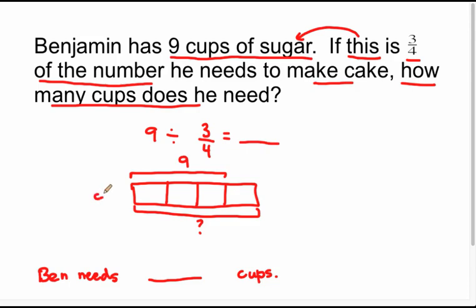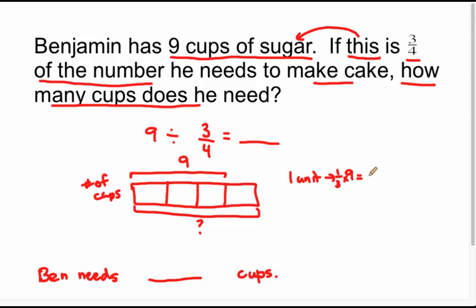And I'm going to mark off three of those parts, and three of those parts is the number nine. So if I wanted to find what all four of these parts are, I first have to find the size of one part — these are the number of cups. I see that nine is being divided equally amongst three equal parts, so I'm going to find what one-third of nine is. One of these smaller units is going to be nine divided by three, and one-third of nine is three. So each one of these pieces is three.